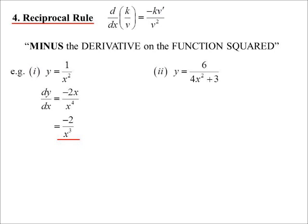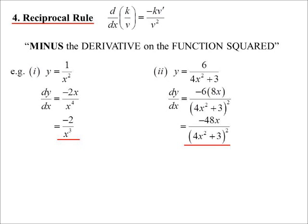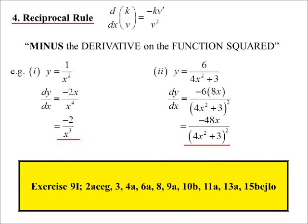y equals 6 on 4x squared plus 3? Again, minus the derivative on the function squared. But of course, there's a constant on top in this case. So like we've seen with other situations, if there's a constant, we just multiply the constant. So we'll have minus 6 times the derivative, 8x, over the function squared, minus 48x on 4x squared plus 3 all squared. So it can just save a little bit of time. Because when you have a constant on the top of a fraction, minus the derivative on the function squared.